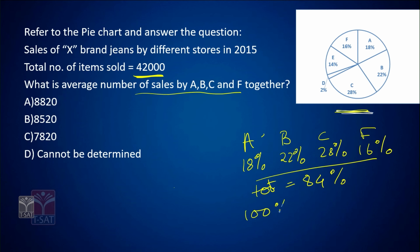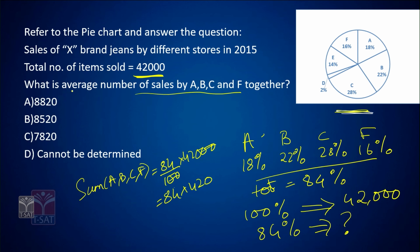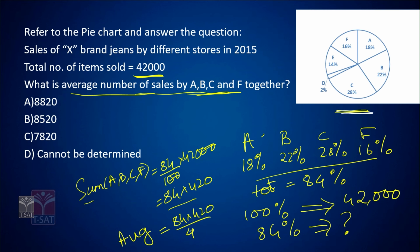100% of the sales is equivalent to 42,000 items. For A, B, C, and F, the sum comes out to be 84/100 × 42,000, which is 84 × 420. The question is asking for the average, and we have 4 stores. So for the average sales, we need 84 × 420 divided by 4, which gives 21 × 420 = 8,820. The answer is option A.